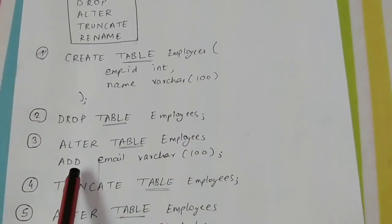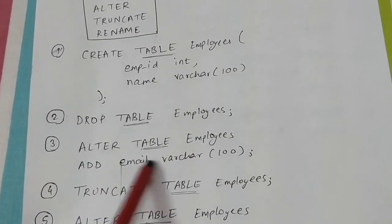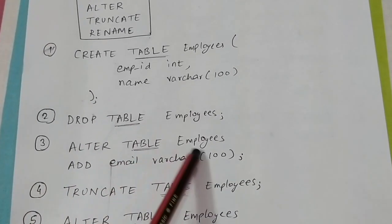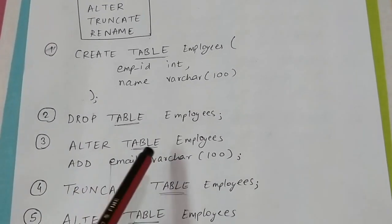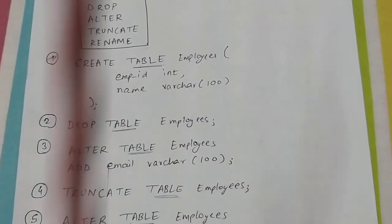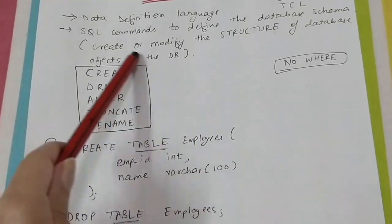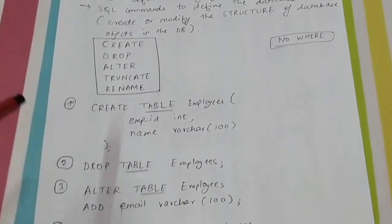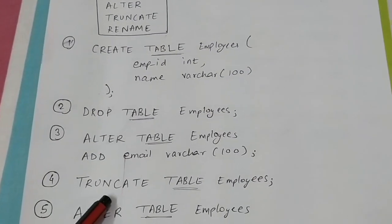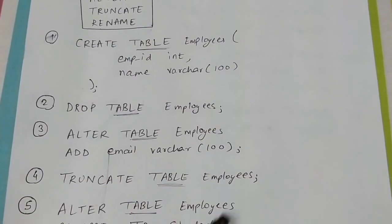The second command is DROP — for example, DROP TABLE employees. The third is ALTER, used when you want to add a column or change the data type of a column, because you are changing the structure of the database — essentially redefining it.